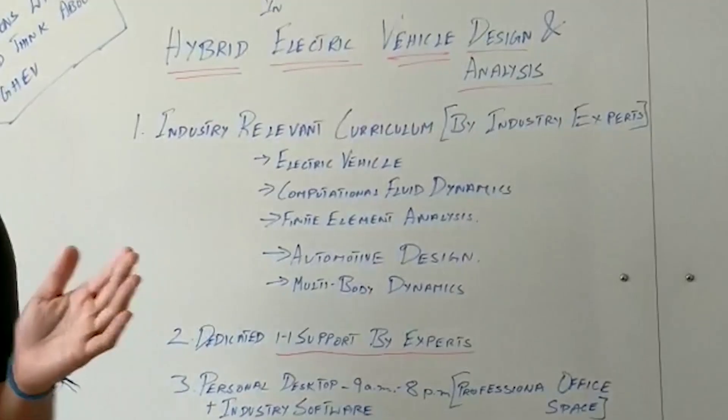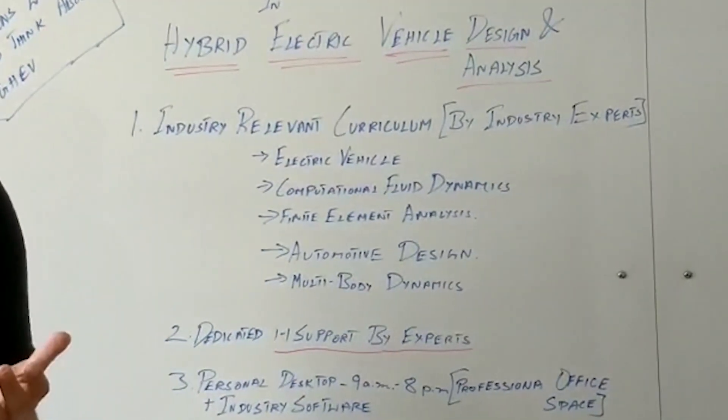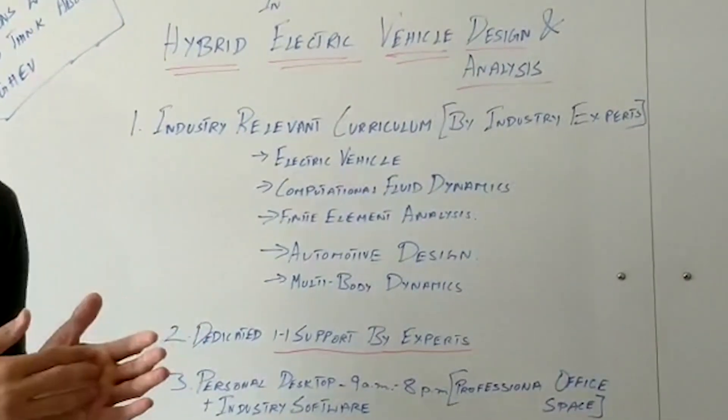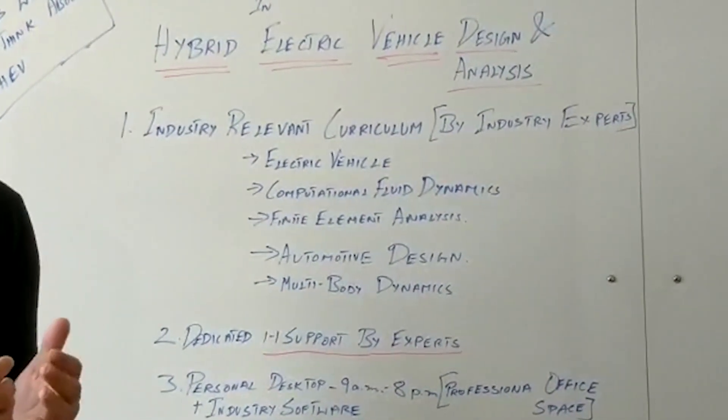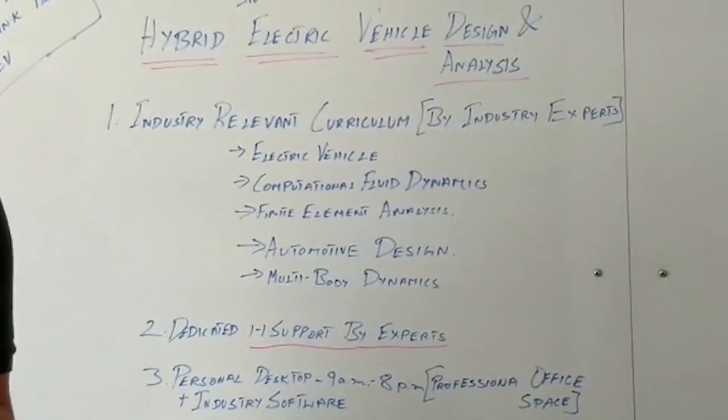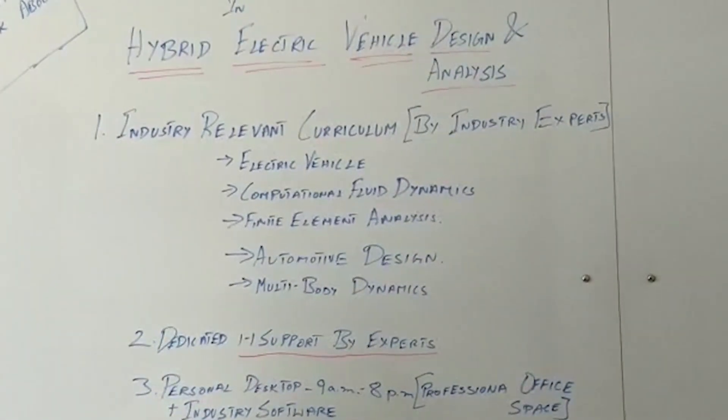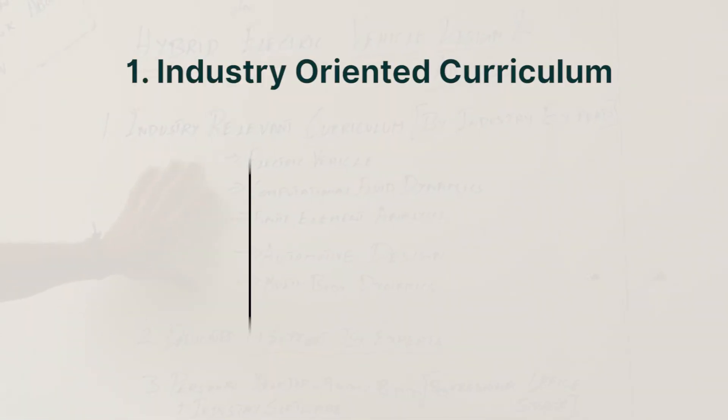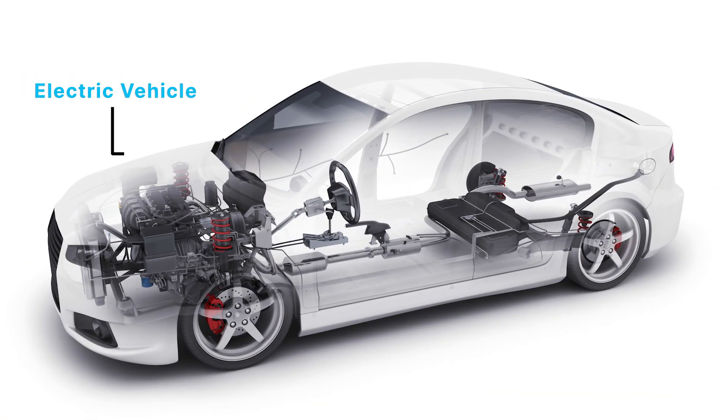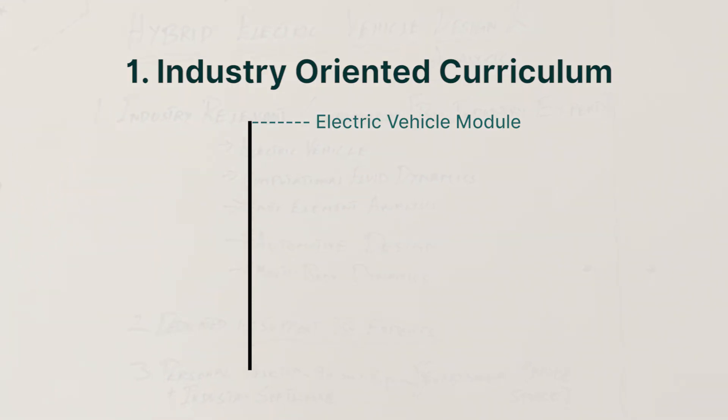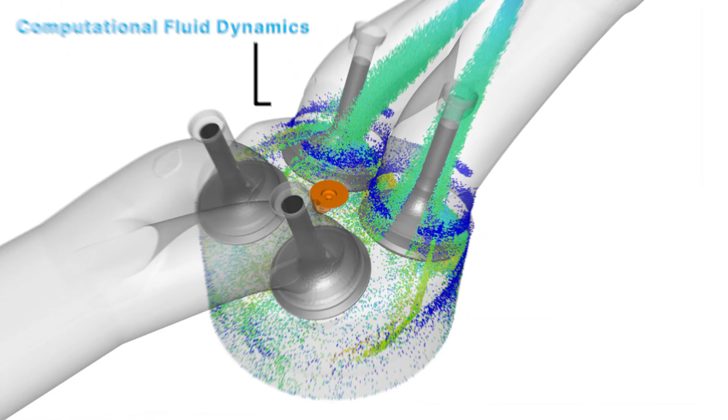The first point is our curriculum is industry relevant. How do we make it industry relevant? We work with industry experts, understand their requirements in their day-to-day work profile, and take those requirements to build that portfolio of courses that you will take in our PGHEV course. There are five modules. The electric vehicle module is compulsory. In this module, you will also add an IC engine module where you understand about the IC engine powertrain. So you know about EV powertrain, then the IC engine powertrain that combines the hybrid part of it.